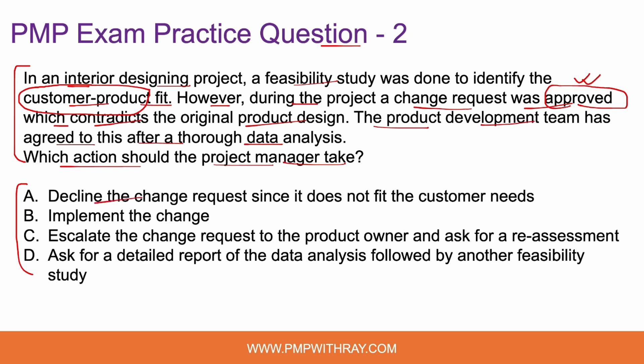Option A: decline the change request since it does not fit the customer needs. Of course this is incorrect, because if the change request has already been approved after a thorough data analysis and the product development team has been involved in making that approval recommendation, then you basically don't have the authority to decline it. If it is approved, you have to implement it — plain and simple. So option A is incorrect.